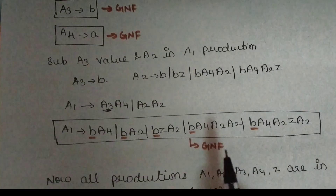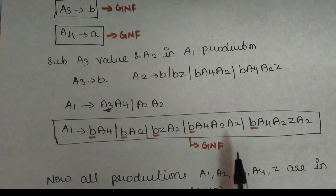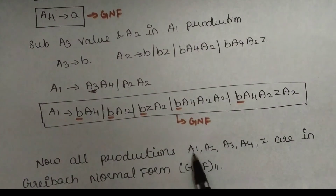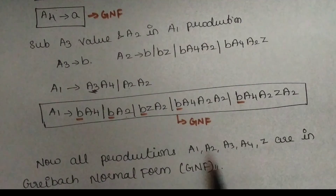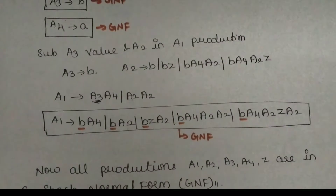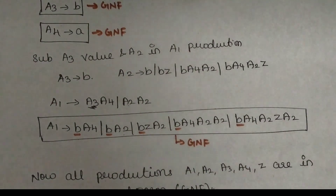We can say what A1 is going to be — it is Greibach Normal Form. So if we do all the productions of this, it is Greibach Normal Form.